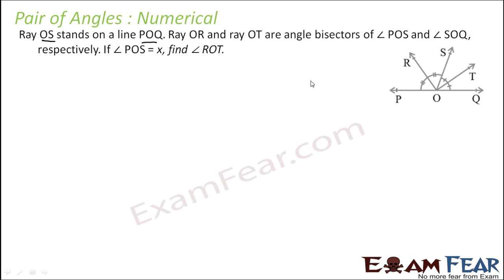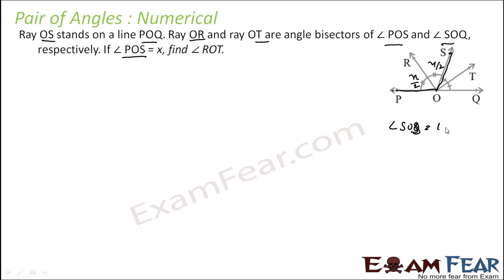Let's take another example. Ray OS stands on line POQ, which is a straight line. Ray OR and ray OT are the angle bisectors of angles POS and SOQ respectively. If angle POS is x, then since OR bisects angle SOP, both halves are x by 2. Since angle SOQ equals 180 minus x, ray OT bisects it, making angle SOT equal to 180 minus x by 2.